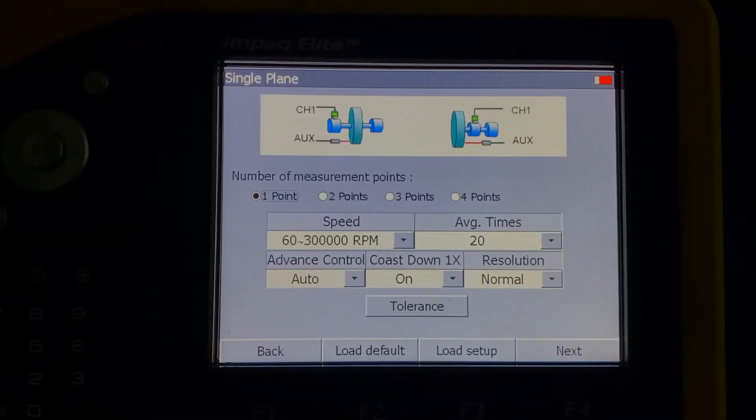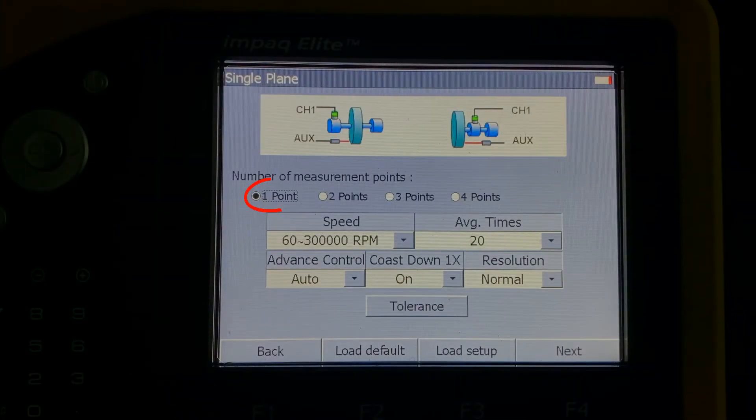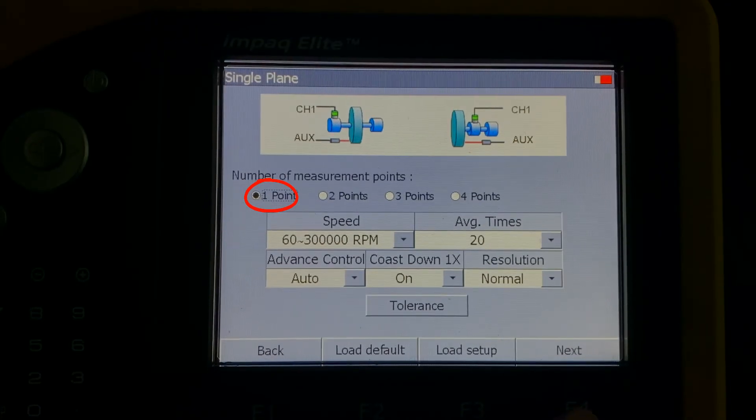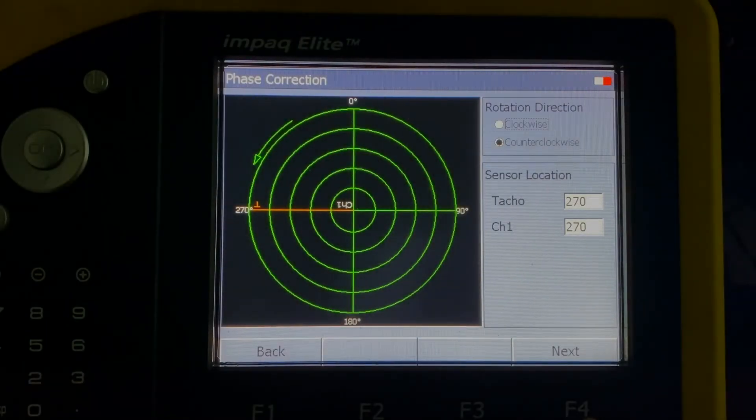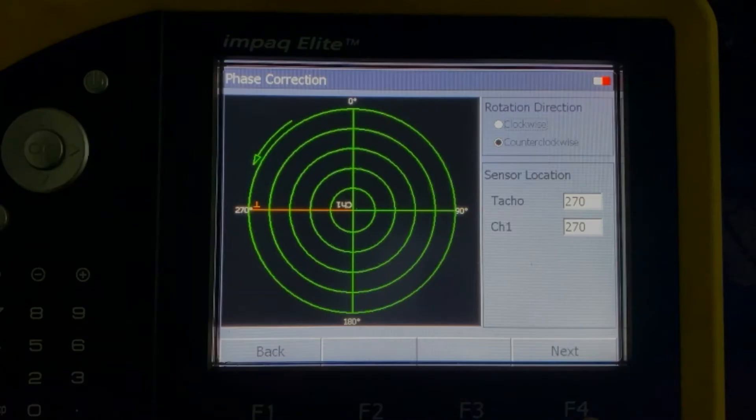Next we will enter the single plane balancing procedure and select the single point balancing. This means that we will only use one accelerometer for this test. Then we will enable the 1x coast down measurement.